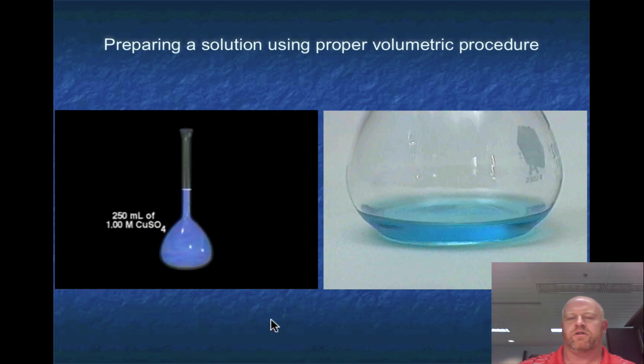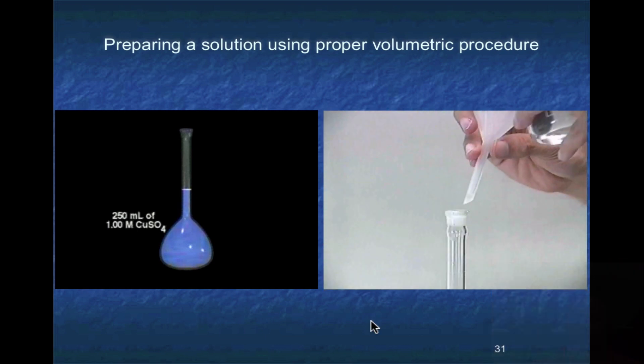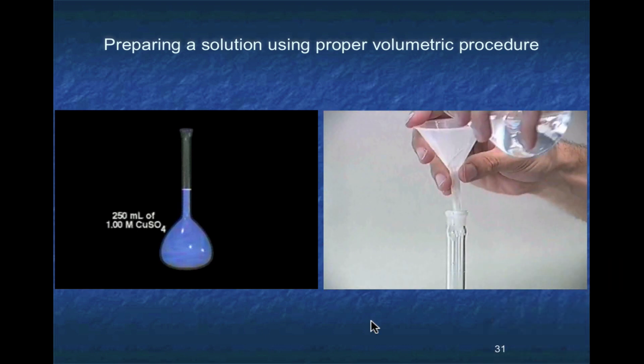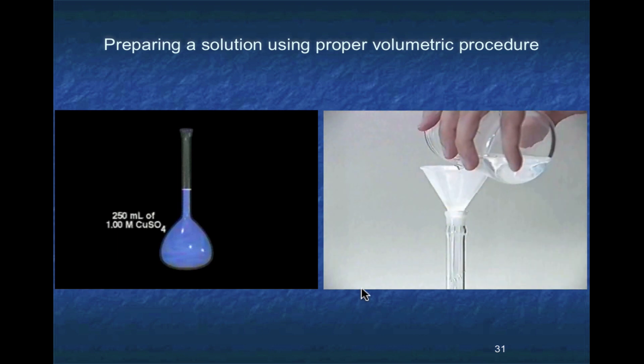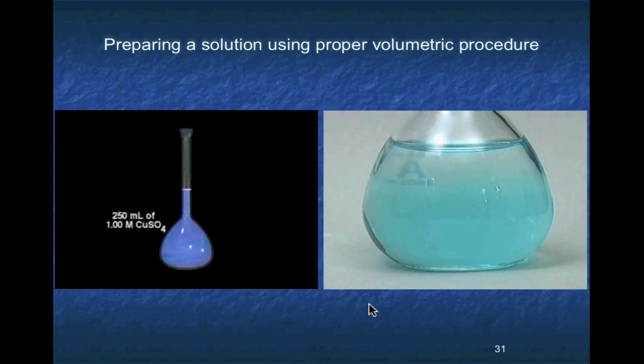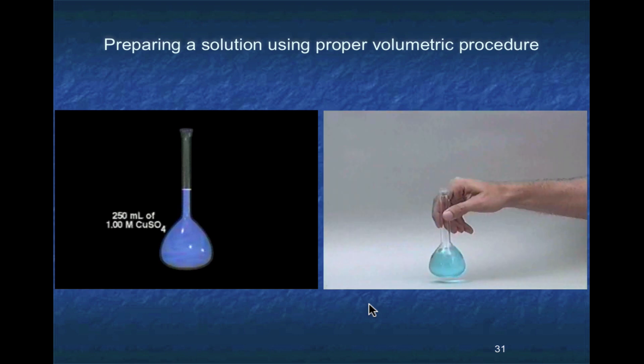This one focuses on the dilution part and making sure that you put in the proper volume. Ready for dilution, use solvent to wash any residual solute from the neck of the flask. Take this last opportunity to mix the solution well before diluting it to the mark.